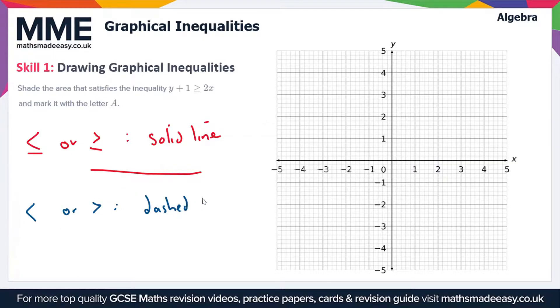Looking at this example here, we have to shade the area that satisfies the inequality y + 1 is greater than or equal to 2x and mark it with the letter A. Let's just rewrite this up here: y + 1 ≥ 2x. Now we just treat this inequality symbol as an equal sign and we're going to rearrange this to make y the subject.